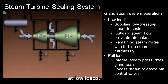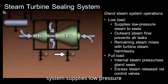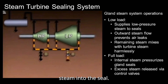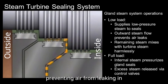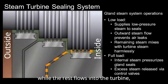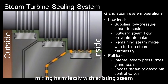Let's see how these systems work together to maintain efficiency and safety. At low loads, when the turbine is under vacuum, the gland steam system supplies low-pressure steam into the seal. Some steam flows outward, preventing air from leaking in, while the rest flows into the turbine, mixing harmlessly with existing steam.